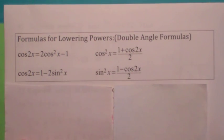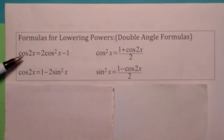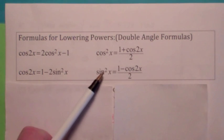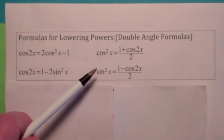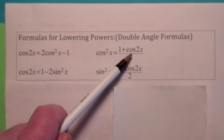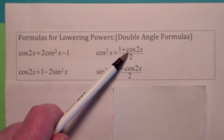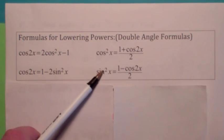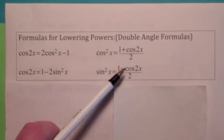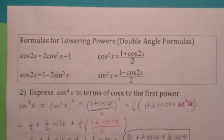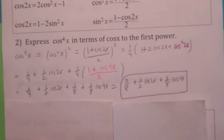Now let's look at the power reduction formulas. These come directly from the double angle formulas for cosine — just two variations. If you solve the first one for cosine squared, you get the power reduction formula for cosine squared. If you solve the second one for sine squared, you get the power reduction formula for sine squared. What they say is: if you have cosine squared or sine squared of something, you can rewrite it as an expression with no trig functions being squared — you just double the angle. This comes up in calculus.